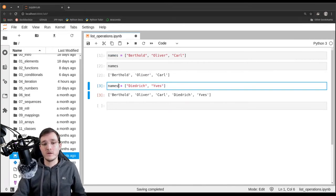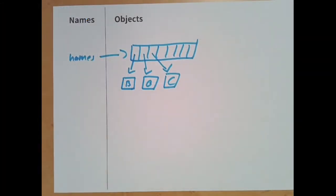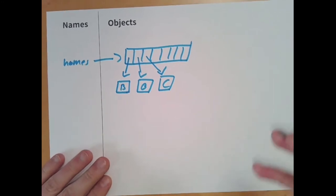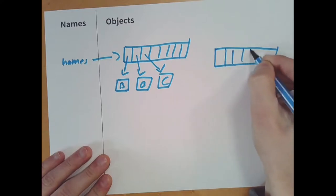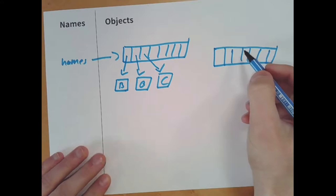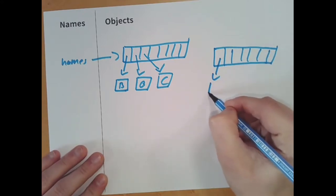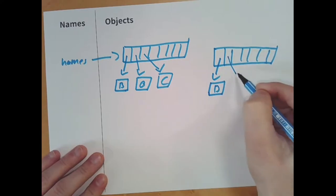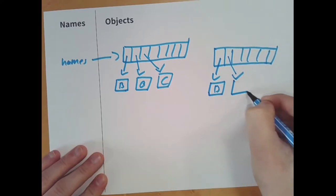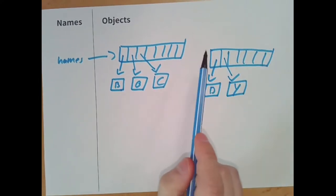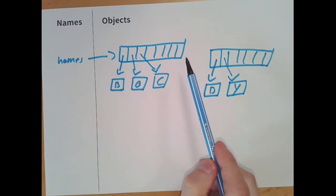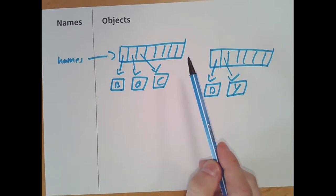Python reads here from left to right, so it reads the variable names first as a reference lookup. Then it says plus, and on the right-hand side it first creates a new list object on the fly — meaning we create it without giving it a name. The new list has Dietrich (abbreviated D) and Yves (abbreviated Y). Now we have two list objects and we are concatenating them. That is the technical term: concatenation. We also saw that when we talked about the string data type in chapter six.